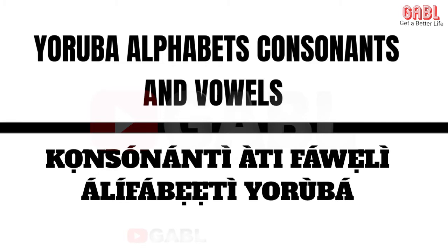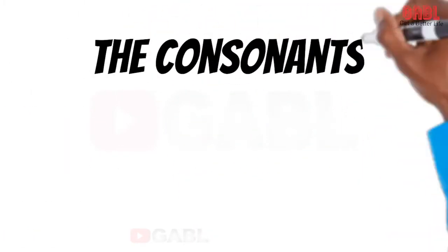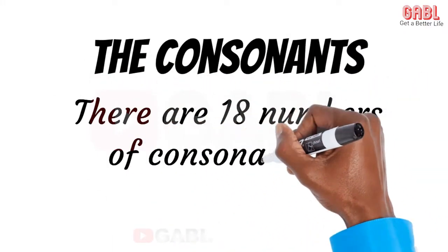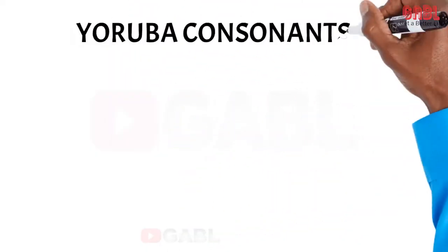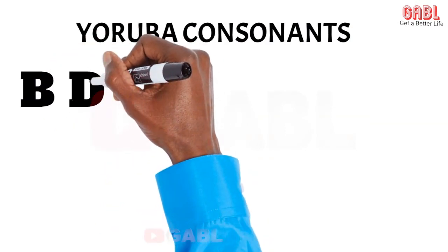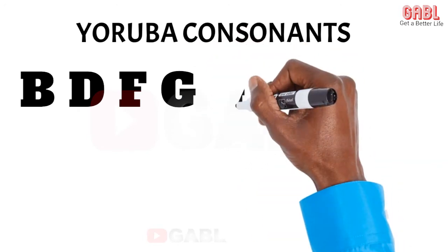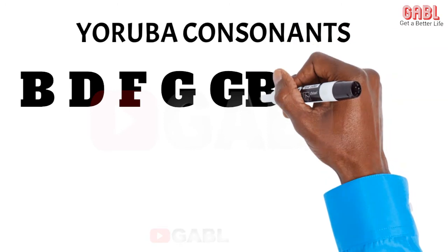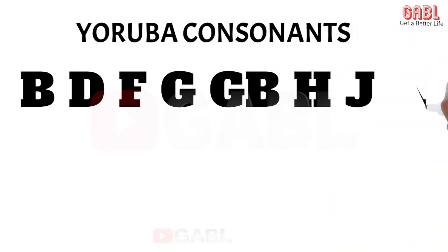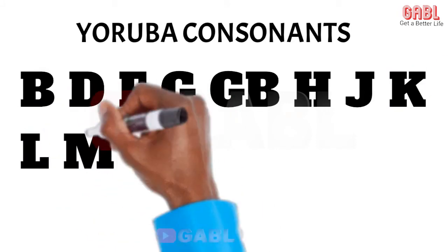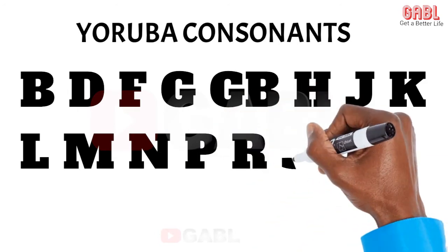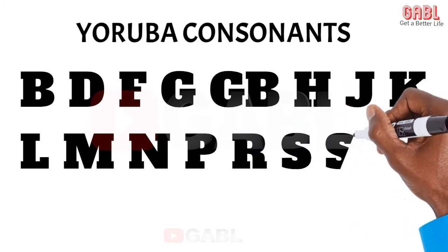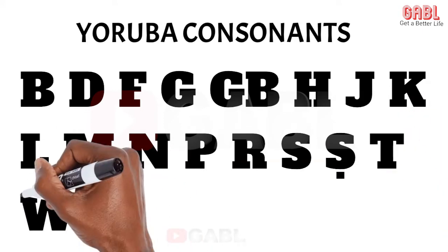There are 18 consonants in the Yoruba alphabet. The following are the Yoruba alphabet consonants: B, D, F, G, GB, GBE, GB, KI, LI, MI, NI, P, RI, SI, SHE, SI, WE, and YE.